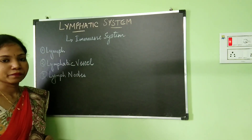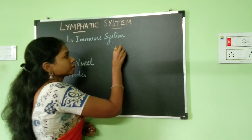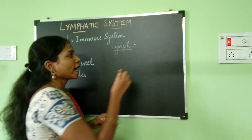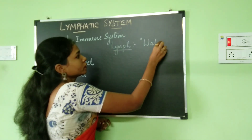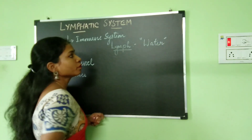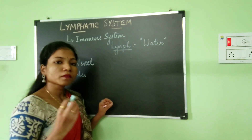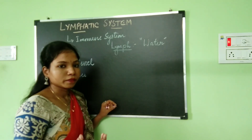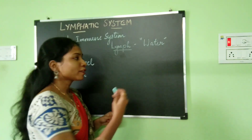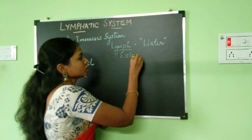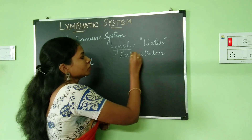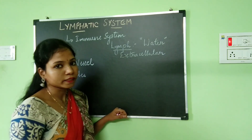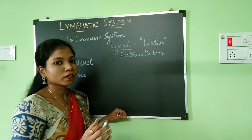First, let's discuss about lymph. So what is this lymph? The word lymph was derived from Latin and lymph means water. This lymph is the second most important circulating fluid in our body, and the first important circulating fluid is the blood. This lymph is actually an extracellular fluid, meaning it is going to be present outside the cells.